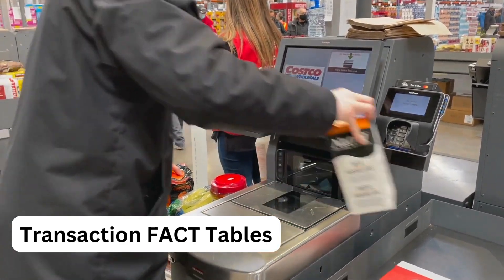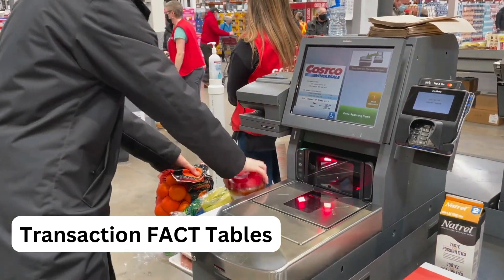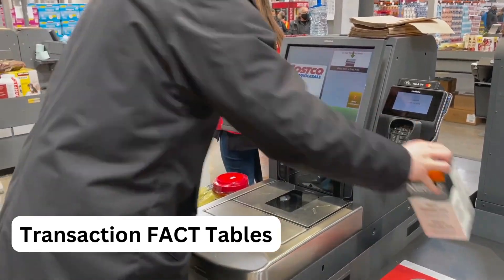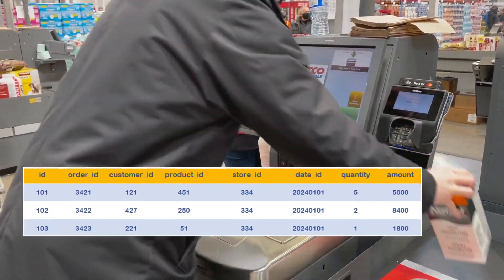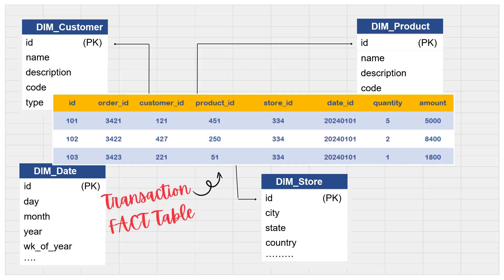The first very common fact table type is the transactional fact table. It captures the measurements of the transaction event at any point of time. For example, let's consider our fact sales table. In the case of the transactional fact table, it is going to have records for all ongoing sales or purchases made by the customer at any given point of time. So for every sale or purchase made, we will have a record in the table. If you look at the records in the transactional fact table, each row represents the details of purchases made, and facts here are mostly additive in nature.